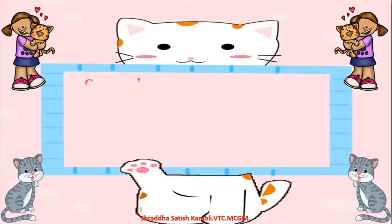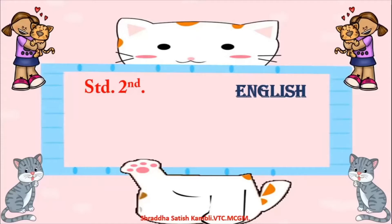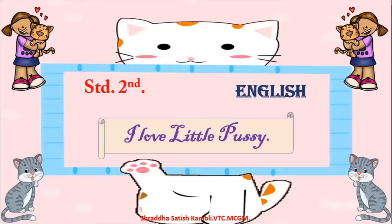Children, today's lesson is for standard second and the subject is English. Now come on, look at this picture on your screen. What can you see? You can see an animal — and which animal is it? Is it a dog or is it a bird? No, it is a cat. There are so many pictures of cats here, which means the lesson has to do with cats. The name of the lesson is lesson number 1.6 — 'I Love Little Pussy.'